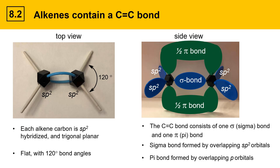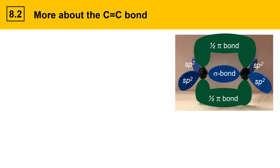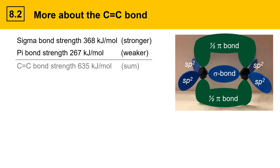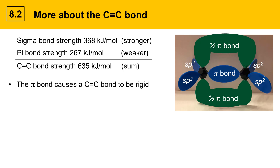Each lobe of the overlapping p orbitals in the top and bottom planes represents half of a pi bond. The C=C double bond consists of a sigma bond with an average bond strength of about 368 kJ/mol and a pi bond with an average bond strength of about 267 kJ/mol. The sigma bond is stronger while the pi bond is weaker. Together they make up the bond dissociation energy of the total carbon-carbon double bond, which is about 635 kJ/mol.